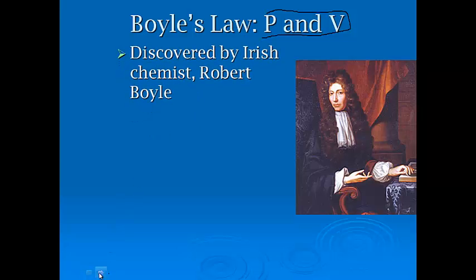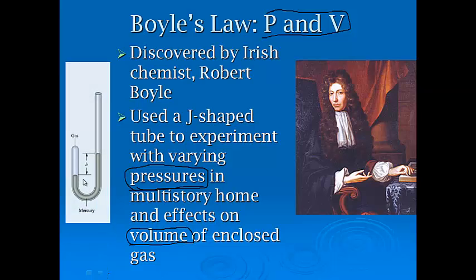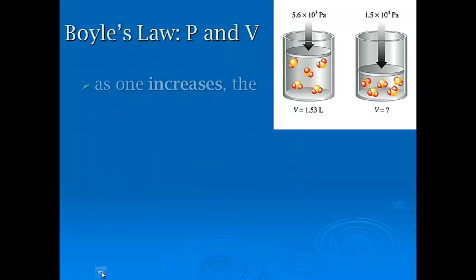So Boyle was an Irish chemist, and he used a J-shaped tube to experiment with varying pressures in multi-story home and the effects on the volume of the enclosed gas. So in other words, he took altitude and differentiation and height to look at how changing the pressure would change the volume of gases and how that might change things. So the law, and here's the gas, so depending on how much it would change, kind of the same lines of the barometer would indicate what relationship they had.